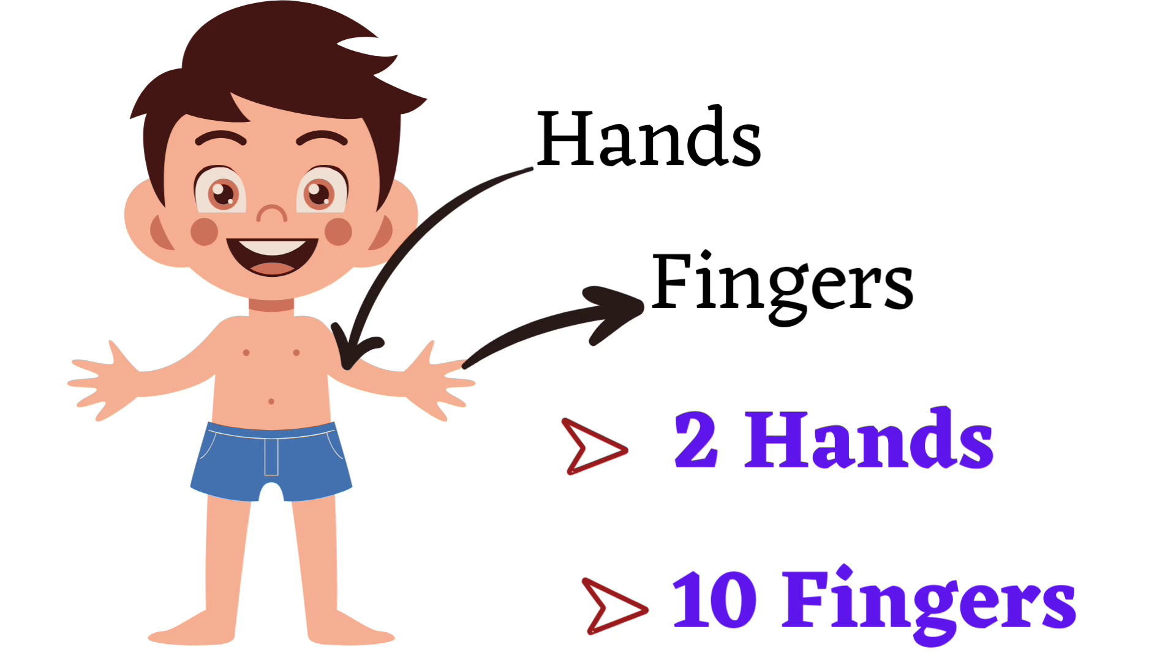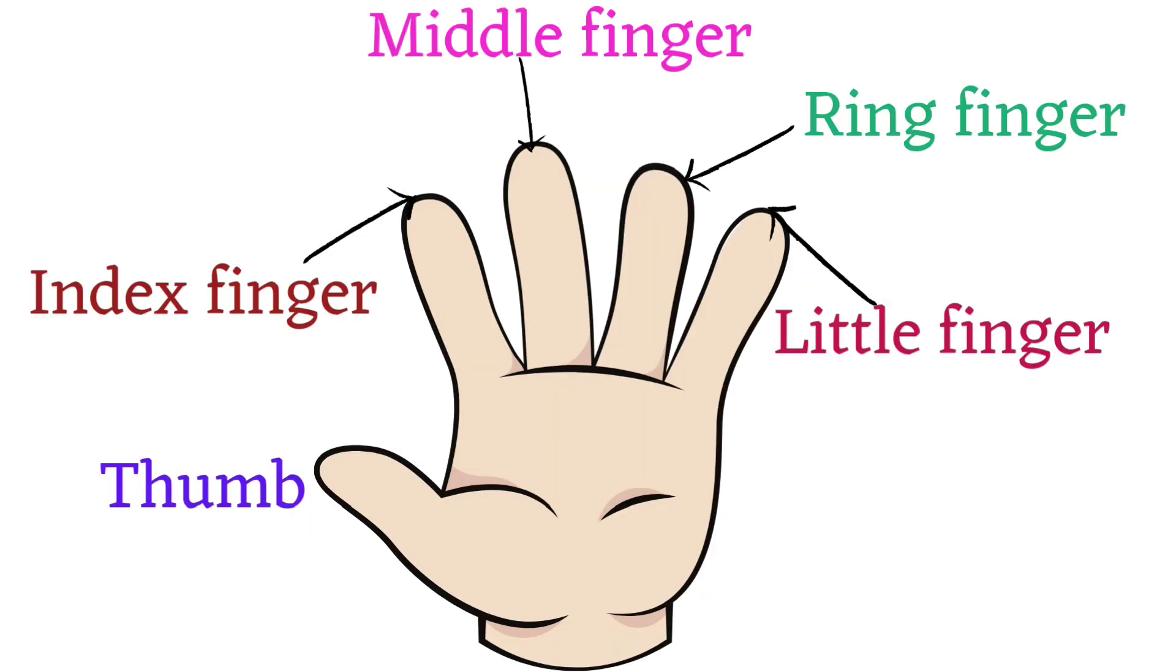How many fingers do we have? We have 5 fingers in each hand. So in total we have 10 fingers. Do you know?